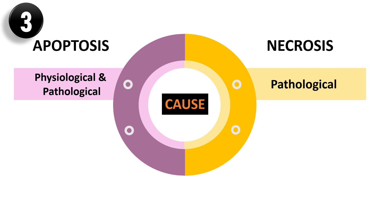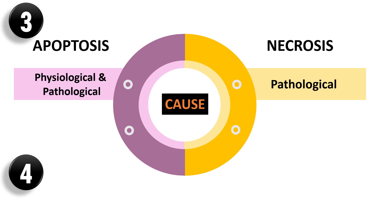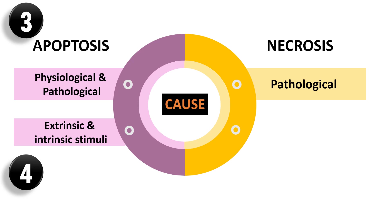Difference 4: Apoptosis can be triggered by external or extrinsic stimuli like hormones, or intrinsic stimuli like accumulation of misfolded proteins. While necrosis is stimulated by extrinsic stimuli like chemicals, excessive heat, etc.